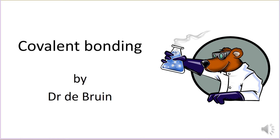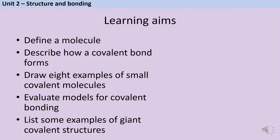This is a revision video for the GCSE chemistry topic of covalent bonding. In this video, we're going to define what we mean by a molecule, describe how a covalent bond forms, draw dot and cross diagrams for the eight examples of small covalent molecules listed in the AQA GCSE specification, evaluate whether a dot and cross diagram is the best type of model to use, and also list some examples of giant covalent structures.